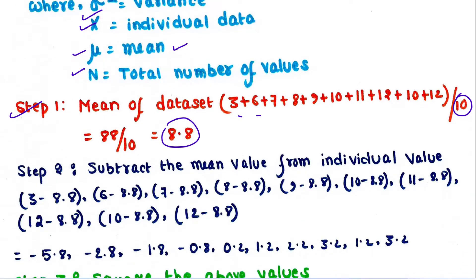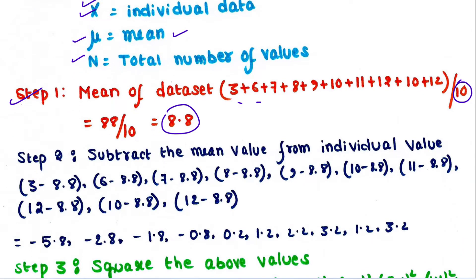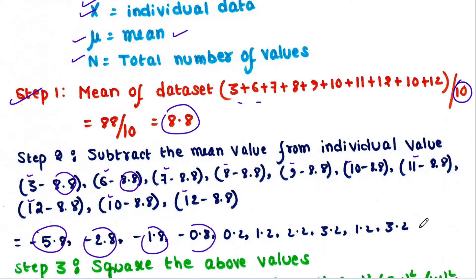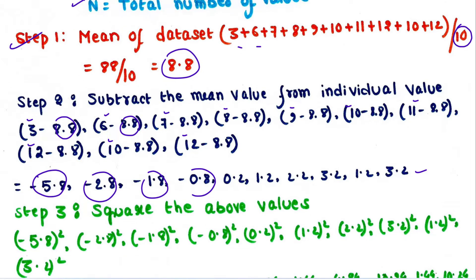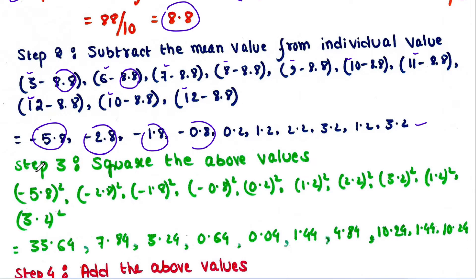Step 2 is to subtract the mean value from each individual value. The mean value is 8.8, so in all cases we subtract 8.8 from the values present in the data set. We get these deviation values. Then step 3 is to square these values, and when we do this we get these squared values.